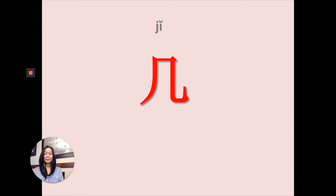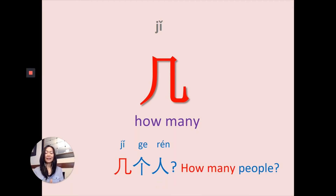几 is a question word asking 'how many,' always associated with numbers. 几个人 means 'how many people.' 几 means how many, 个 is the major measure word for people. Make sure you always add the measure word 个 to describe people — 几个人.